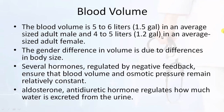Blood volume is 5 to 6 liters in an average-sized adult male and 4 to 5 liters in an average-sized adult female. The gender difference in volume is due to differences in body size. Several hormones regulated by negative feedback ensure that blood volume and osmotic pressure remain relatively constant.